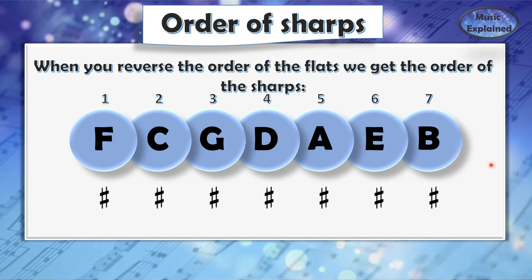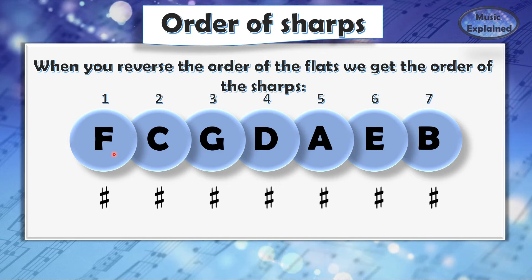When you reverse the order of the flats, we get the order of the sharps: F-sharp, C-sharp, G-sharp, D-sharp, A-sharp, E-sharp, and B-sharp.